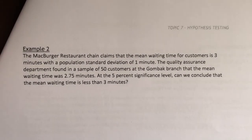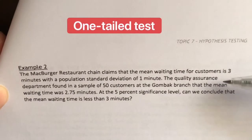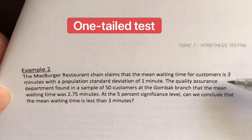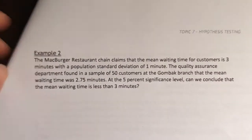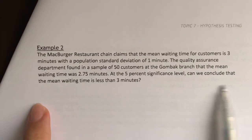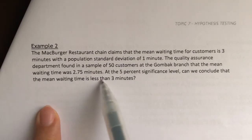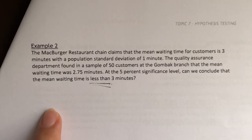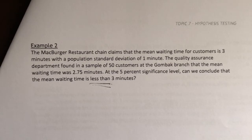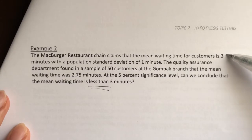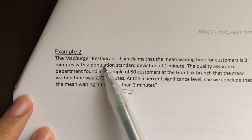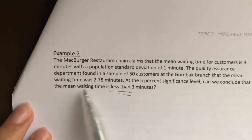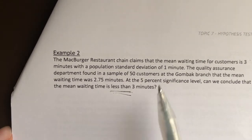Now let's try the second example, which is also a one-sample hypothesis test for population mean, but this time it's a one-tailed test. The question is exactly the same, except the last part now asks: can we conclude that the mean waiting time is less than 3 minutes? That's how you know if it's one-tailed or two-tailed — you need to pick up those details. The significance level is still 5%, population standard deviation is 1 minute (known), sample size is 50 (large), and sample mean is 2.75.